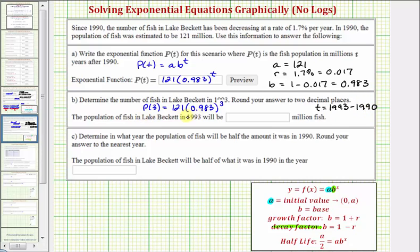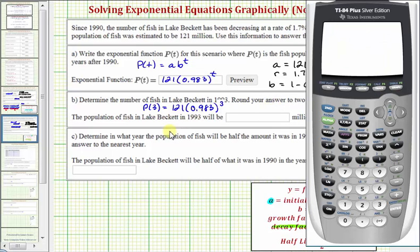p of three equals 121 times 0.983 raised to the power of three. Let's evaluate this on the calculator, and we are asked to round to two decimal places. From the home screen, we could just enter 121 times 0.983, close parenthesis, raise to the power of three, press enter. To two decimal places, this would be approximately 114.93, remember this is in millions.